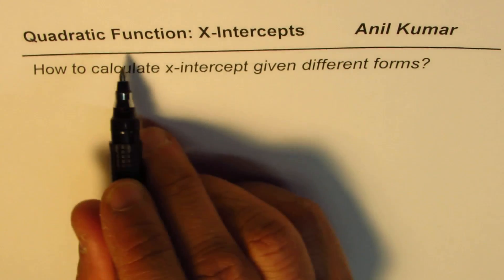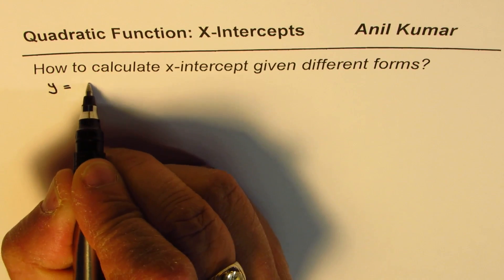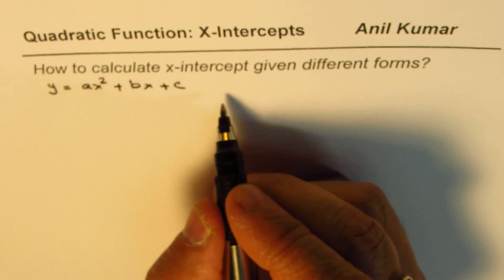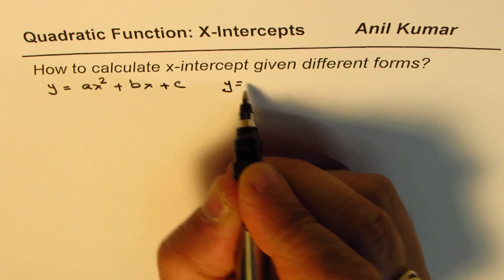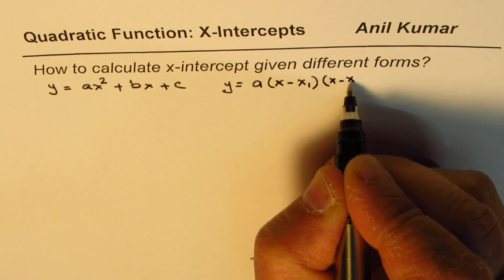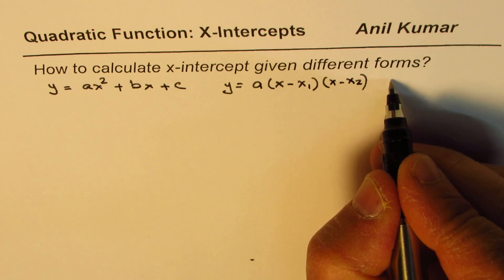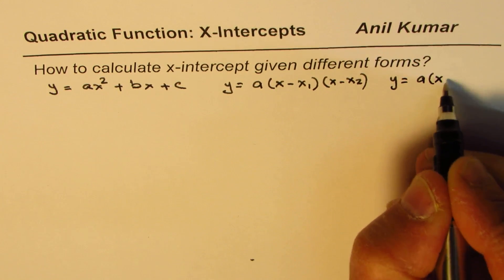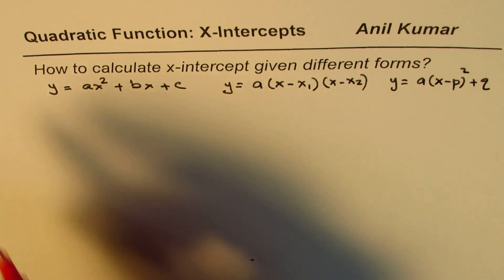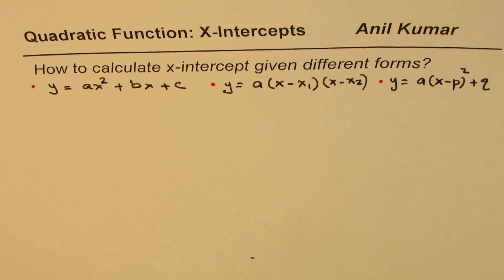There are three different forms in which quadratic equations are given. One is called the standard form, which is y equals ax squared plus bx plus c. Then we have the factored form, which can be written as y equals a times (x minus x1) times (x minus x2). And we also have the vertex form, which is y equals (x minus p) squared plus q.